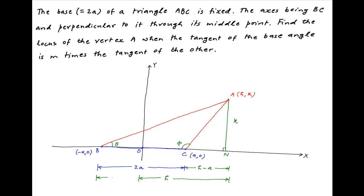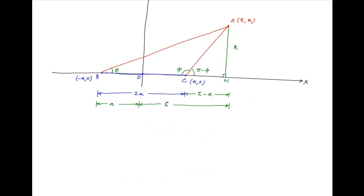Also, the distance OB is equal to A because the coordinates of point B are (-A, 0). Finally, note that angle ACN is equal to π minus φ.